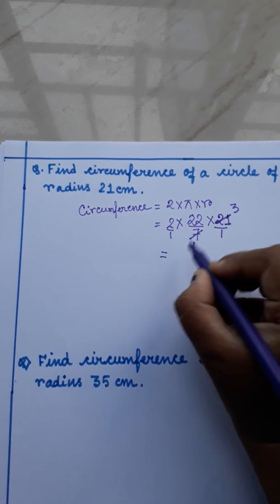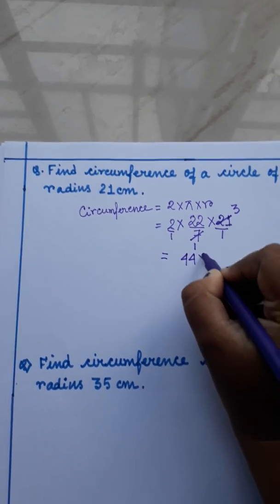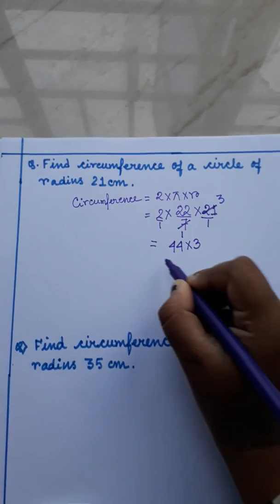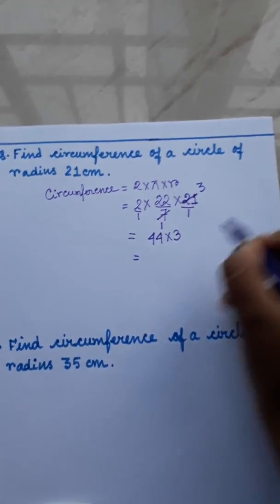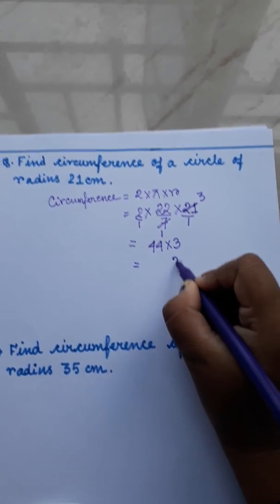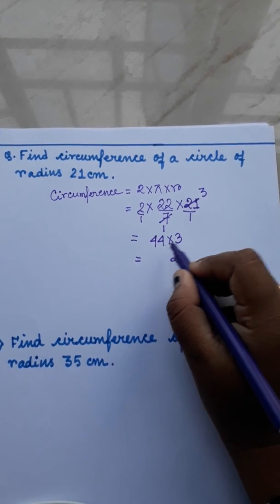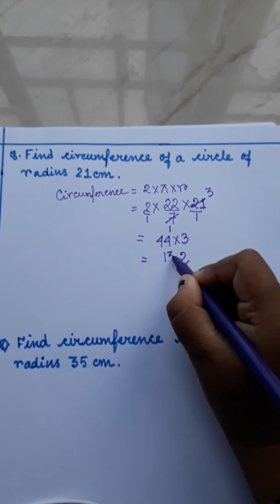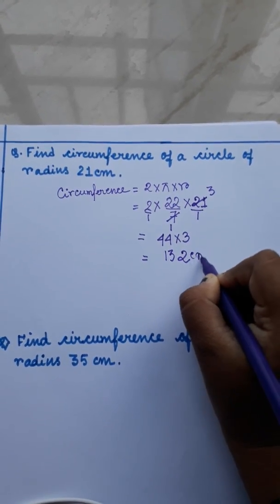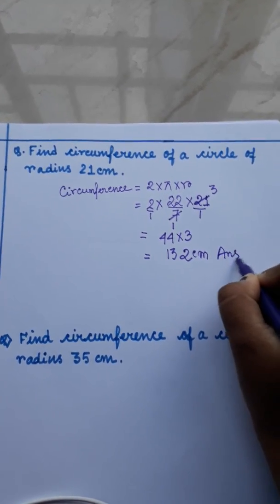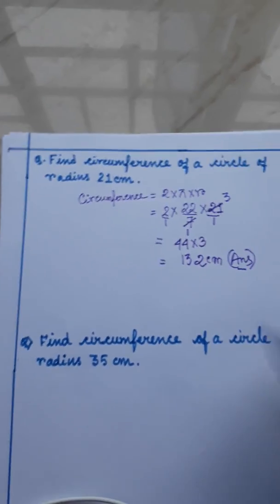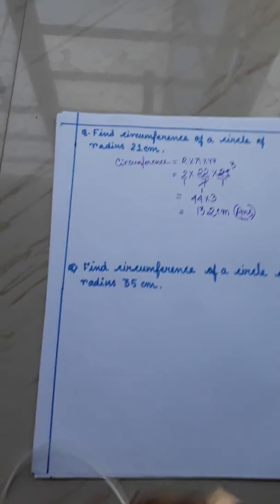Now, we will do multiplication. 2 into 22, that means 44 into 3. 4 times 3 is 12. 12, we write 2, carry 1. 4 times 3 is 12, plus 1, 13. So here our answer will be 132 cm. This is the answer of the second one.